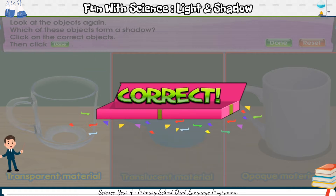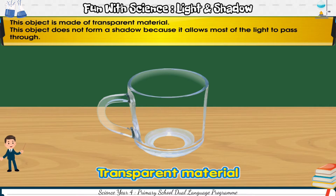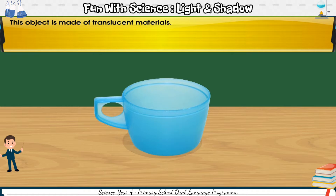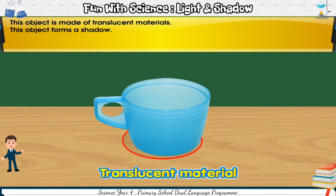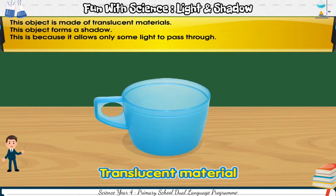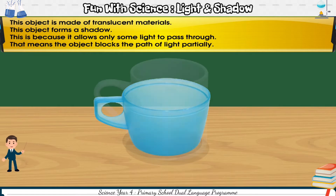Correct. This object is made of transparent material. It does not form a shadow because it allows most of the light to pass through. This object is made of translucent material. It forms a shadow because it allows only some light to pass through — that means the object blocks the path of light partially.